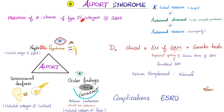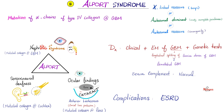Alport syndrome: mutation of the alpha chain of type 4 collagen in the glomerular basement membrane — affecting kidneys, eyes, and ears. Mostly X-linked recessive, so mostly boys. The clinical triad is hematuria, sensorineural deafness, and ocular findings including bilateral congenital cataracts and anterior lenticonus — where the anterior lens surface bulges forward like a cone. On electron microscopy, you see splitting of the lamina densa of the glomerular basement membrane — a lamellated GBM. Genetic testing can confirm. Complication: end-stage renal disease, often requiring dialysis or kidney transplant.